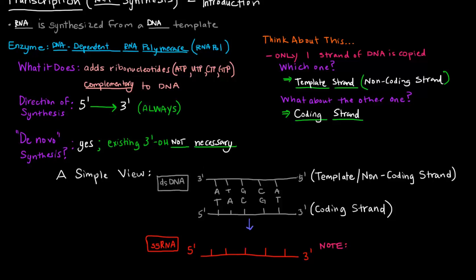So if this is 3' to 5' here, then if we're synthesizing 5' to 3', the RNA polymerase is going to read the DNA strand 3' to 5' so that it can synthesize the RNA 5' to 3' because it has to be anti-parallel.